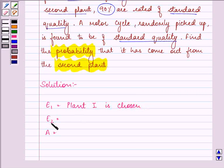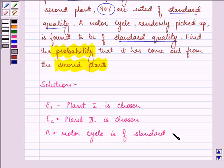Event E2 is the event of choosing plant 2. And event A is the event of picking up a motorcycle that is of standard quality.